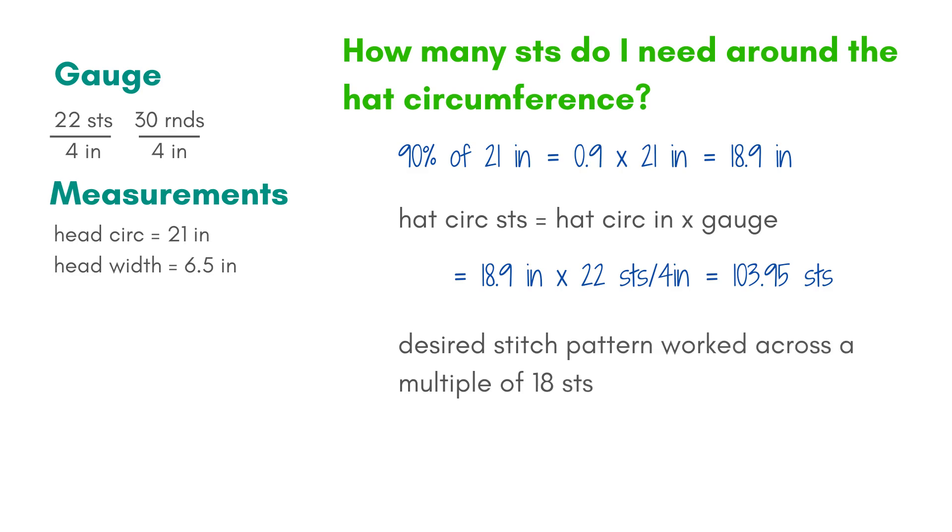Obviously, I can't knit 103.95 stitches, but this number tells me that my hat needs to be about 104 stitches around to fit comfortably. I had a stitch pattern in mind for my hat. So before I cast on, I double-checked to make sure using it would give me an appropriate hat circumference. My stitch pattern was worked across a multiple of 18 stitches. If I repeat 18 stitches six times, it works out to 108 stitches.